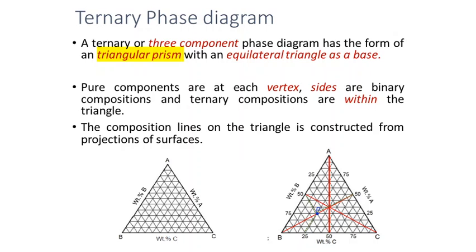Vertex A represents 100% A, vertex B represents 100% B, and vertex C represents 100% C. The composition varies along the edges of the equilateral triangle. Considering edge AC, the binary composition of A and C varies; edge AB shows the binary A–B composition; and edge BC shows the binary B–C composition. So the sides represent binary compositions. Within the triangle we can represent the ternary phase regions. The vertices are single-phase compositions, the sides are two-phase binary compositions, and within the triangle we mark the three-phase or ternary phase regions.